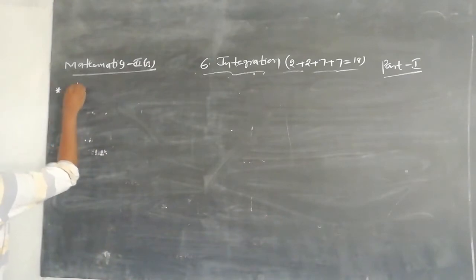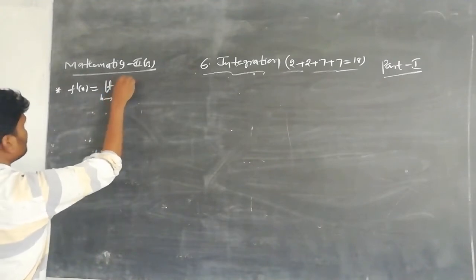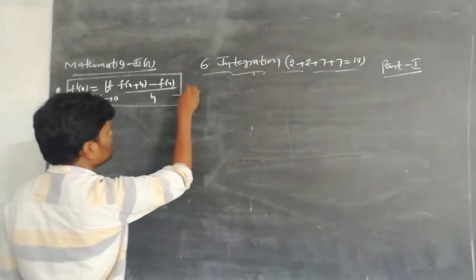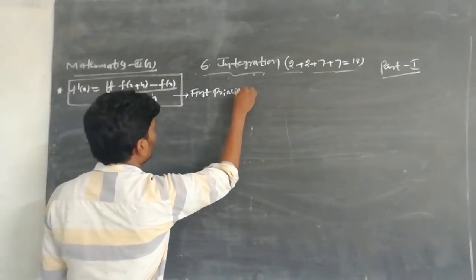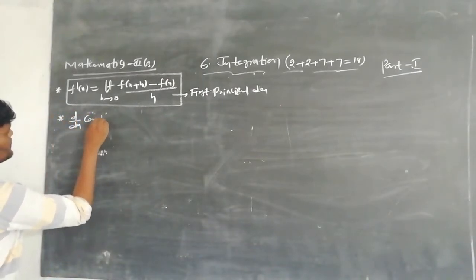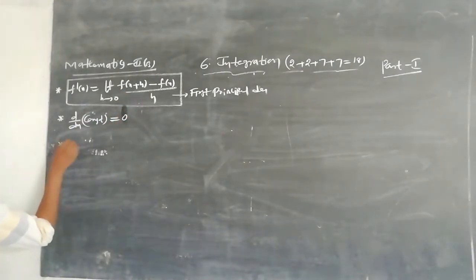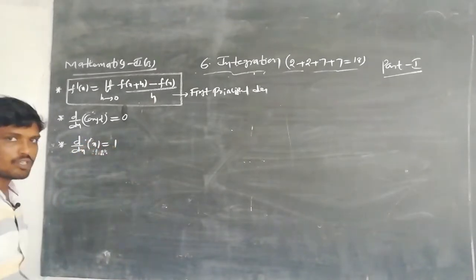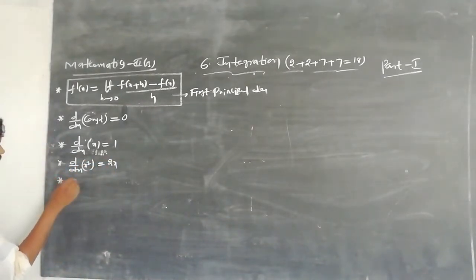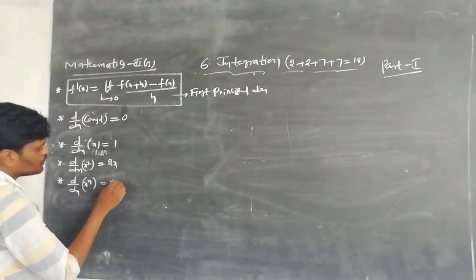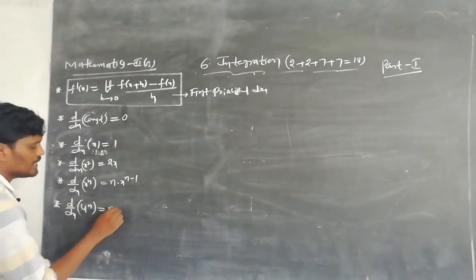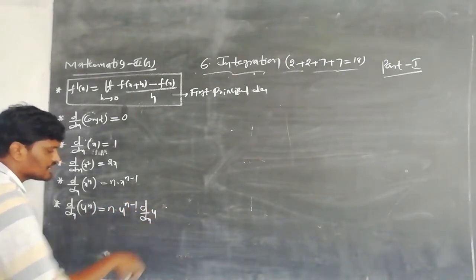Once again, write down the formulas. f'(x) = lim(h→0) [f(x+h) − f(x)] / h. This is the first principle of derivative, or differentiation. First formula: derivative of a constant is equal to 0. Second formula: derivative of x is equal to 1. Next, derivative of x² is equal to 2x. Similarly, derivative of x^n is equal to n·x^(n−1). Derivative of u^n is n·u^(n−1)·(du/dx). This is the chain rule.